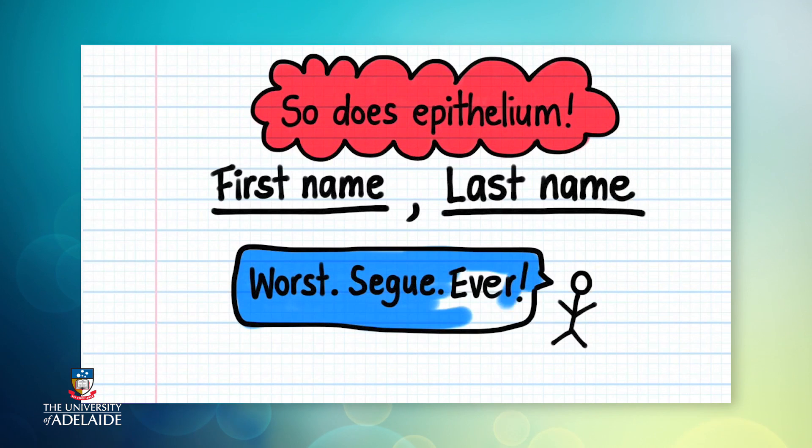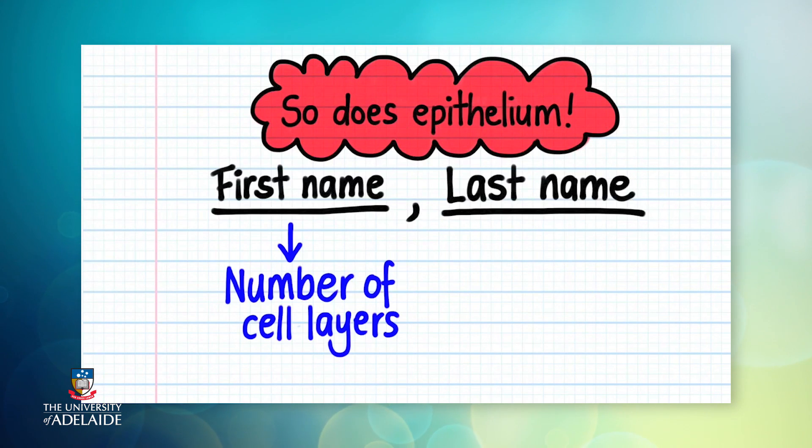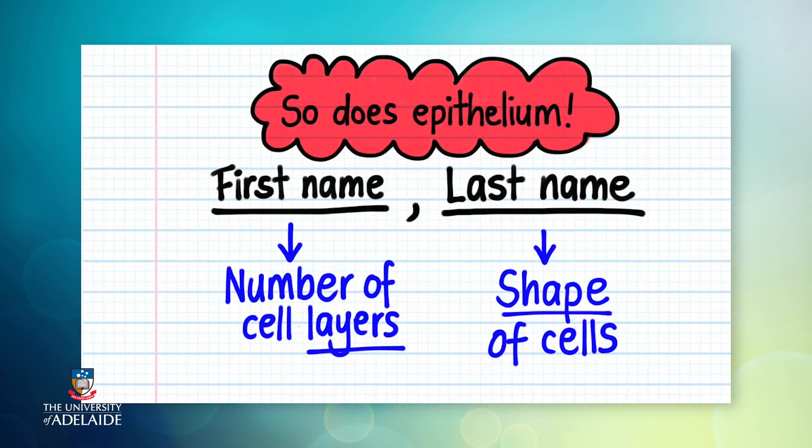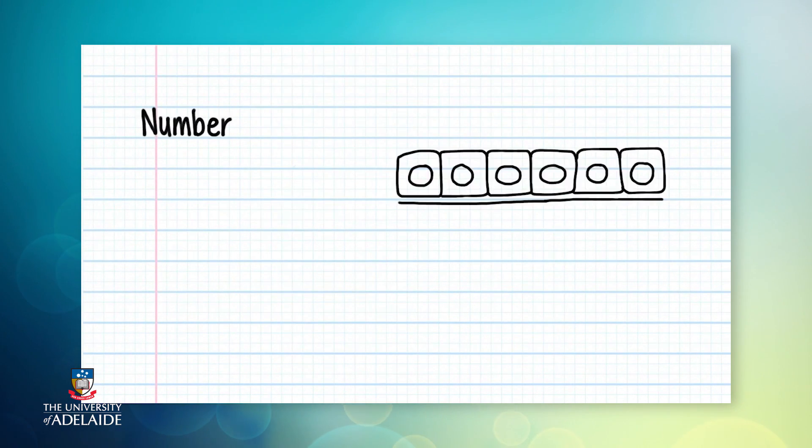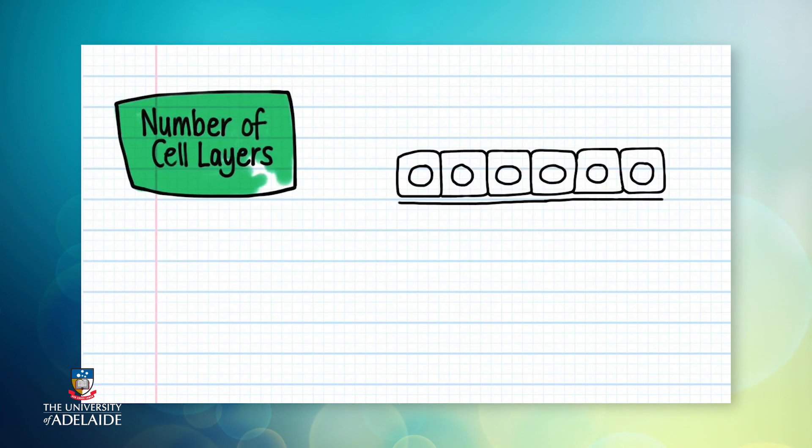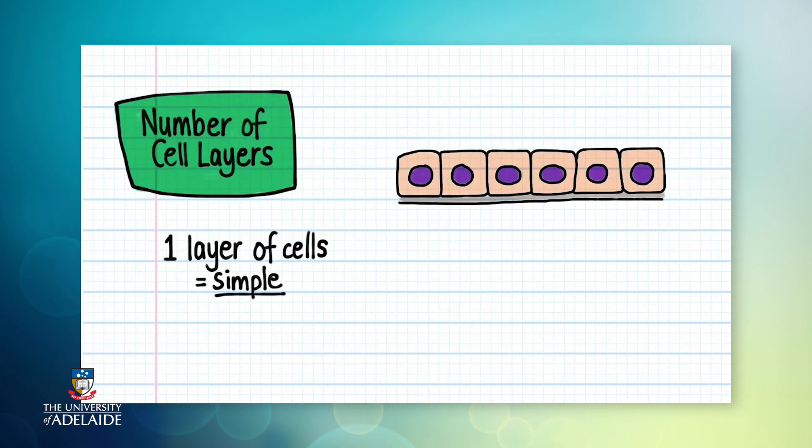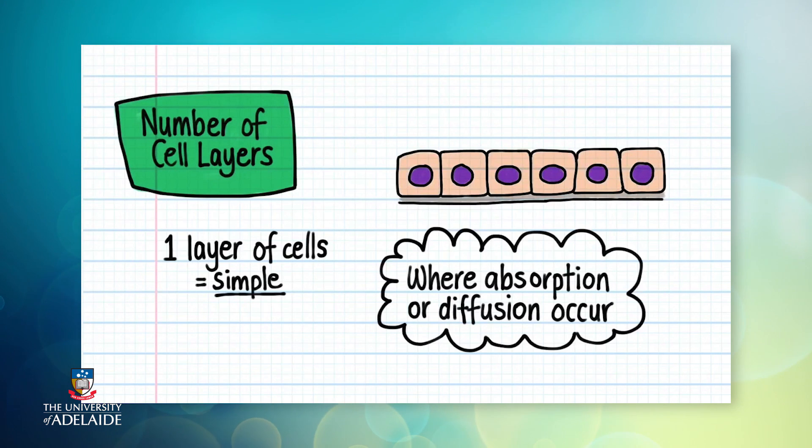In epithelial tissue, the first name always indicates the number of cell layers present, whilst the second name indicates the shape of the cells. Let's look at the number of cell layers first. If only one layer of cells is present, we call the epithelium simple. Simple epithelium is found where rapid absorption or diffusion occurs, because material can pass really quickly through just one layer of cells.